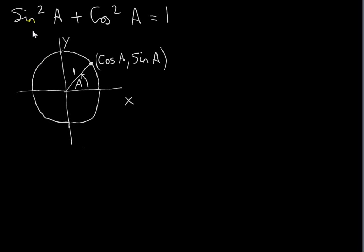Functions with double angles have identities that are derived using this identity here. First, I will derive this identity — it's not a double angle identity, we just have A in it. In previous videos, I discussed the unit circle, that's the circle of radius 1, centred at the origin of the XY plane. In the first quadrant, the coordinates of any point are given by cos A, sin A — that's just from basic trigonometry.